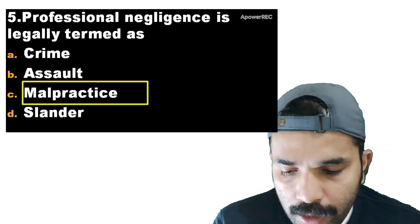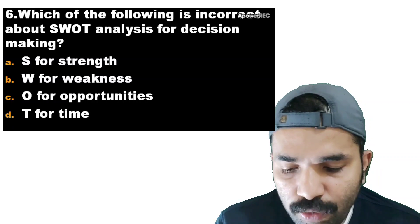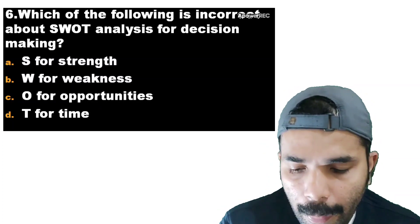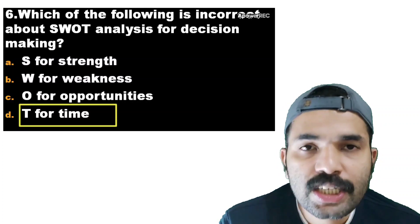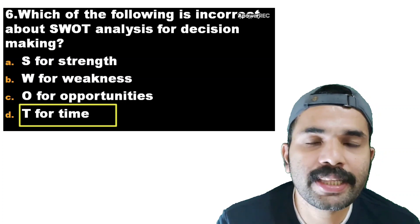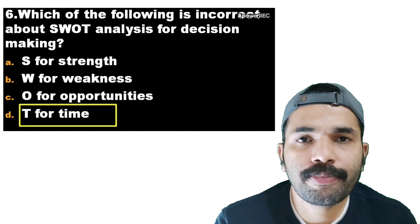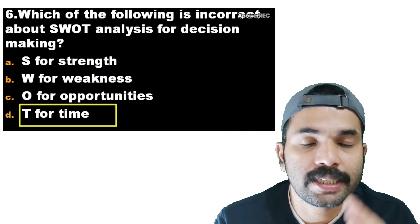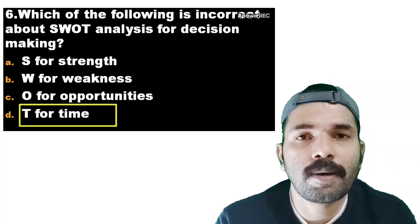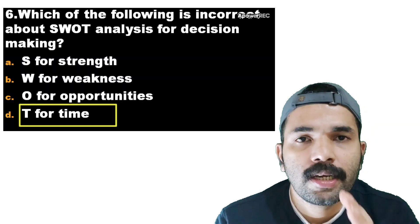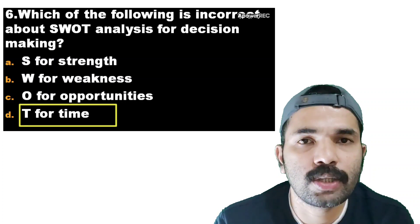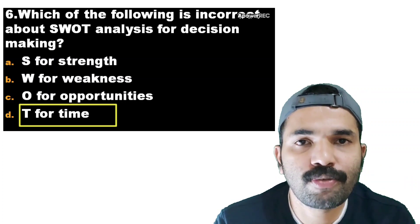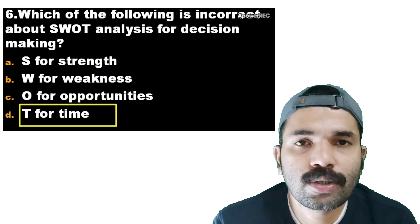Which of the following is incorrect about SWOT analysis for decision making? S for strength, W for weakness, O for opportunities, T for type. The correct answer is T for type — it is incorrect. In SWOT analysis, T stands for threat, not time or type. It is a planning technique used by an organization or a person.